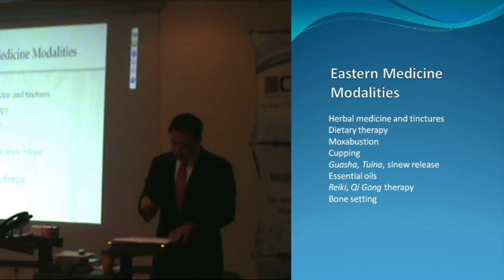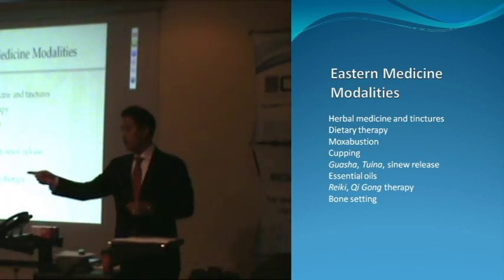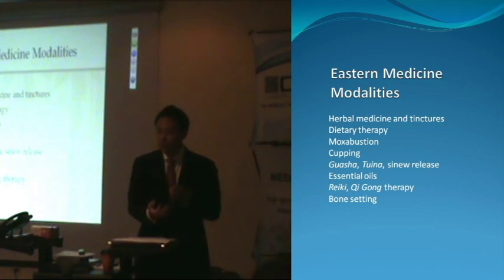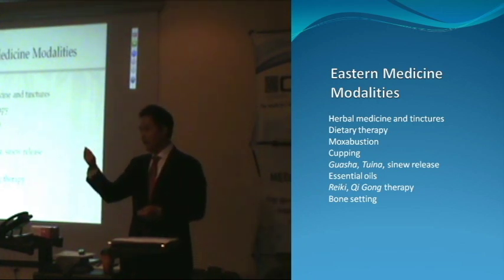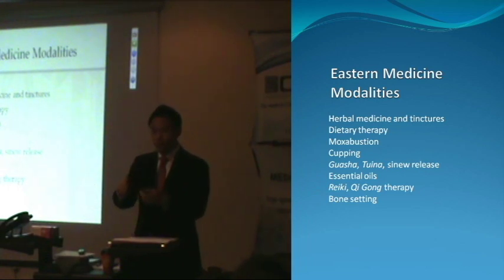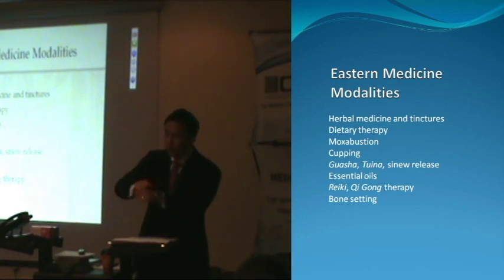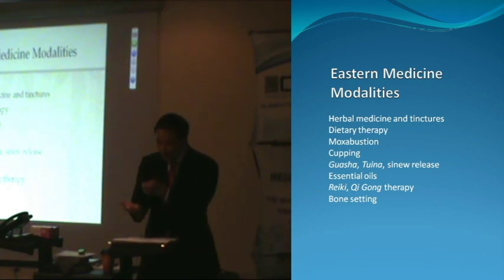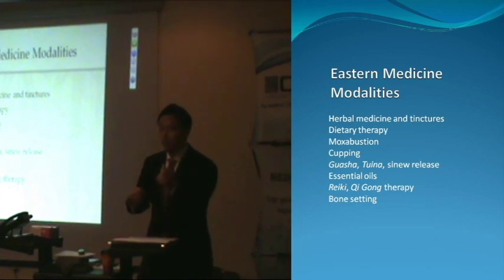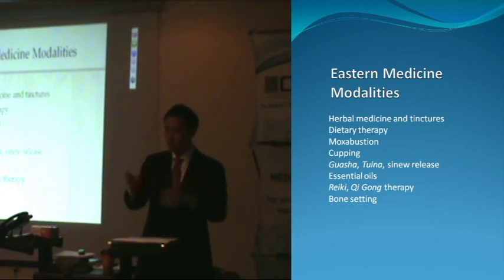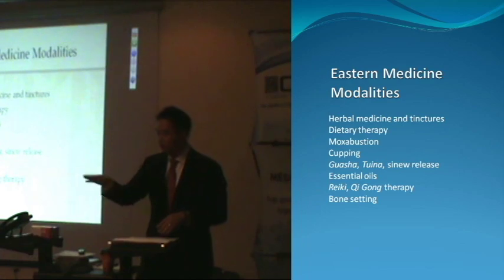Other modalities include gua sha and tui na. Gua sha and tui na operate on the same concept as cupping, except they're not as deep and powerful. You use a smooth surface — like a bottle cap or a spoon — apply oil, and rub it on the surface of the body. If you have an injury or pain, it brings up the stagnant blood underneath and you see bruising form literally within seconds. If there is no pain, you do not see bruising come to the surface. It just doesn't reach as deep as a cup.